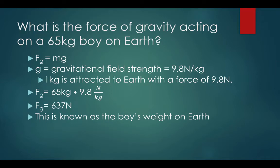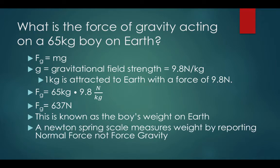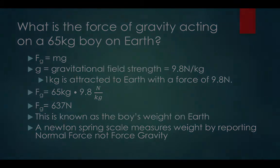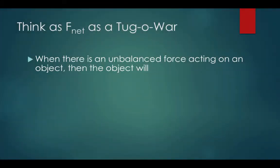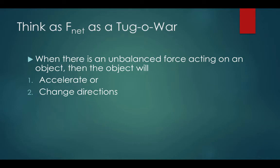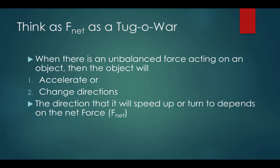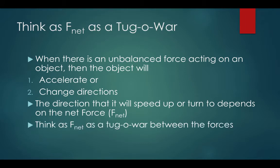This is known as the buoy's weight on Earth. A newton spring scale measures weight by reporting normal force, not force of gravity. When there's an unbalanced force acting on an object, the force will accelerate or change directions. The direction it will speed up or turn depends on Fnet, the net force. Think of Fnet as a tug-of-war between the forces, where the value of Fnet is equal to the winner minus the loser.